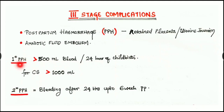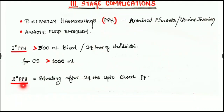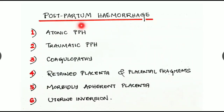In primary postpartum hemorrhage, there is loss of more than 500 ml of blood within 24 hours of childbirth, and for cesarean section it is more than 1000 ml. In secondary postpartum hemorrhage, there is bleeding after 24 hours of labor and up to six weeks postpartum.